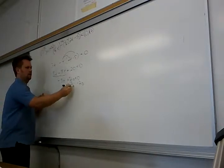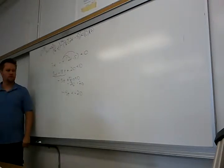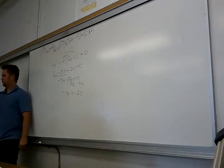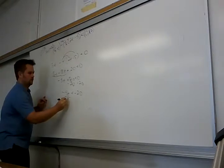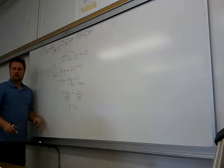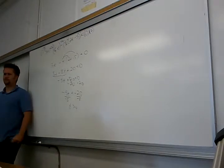You have negative 5T minus 20 less than zero. Subtract 20, then you divide by a negative. Of course you've got to flip the sign, so it becomes T is greater than 4. Then you can graph that on a number line and write it in interval notation.